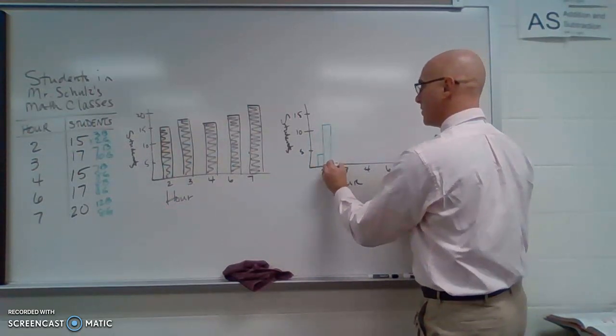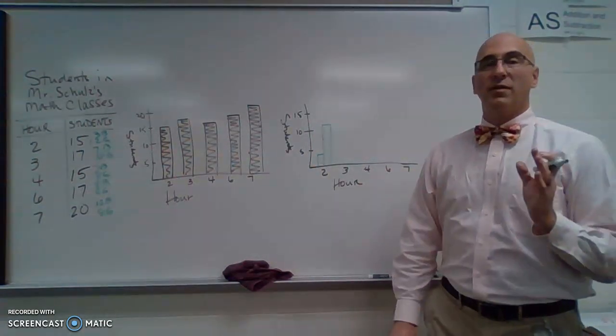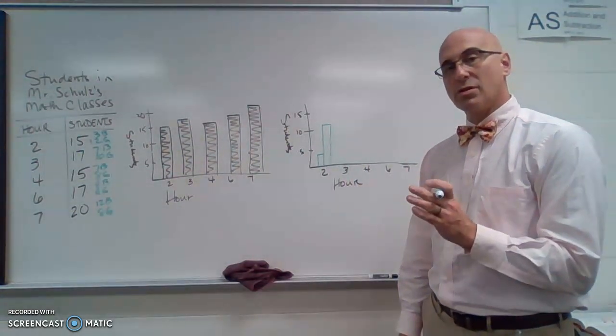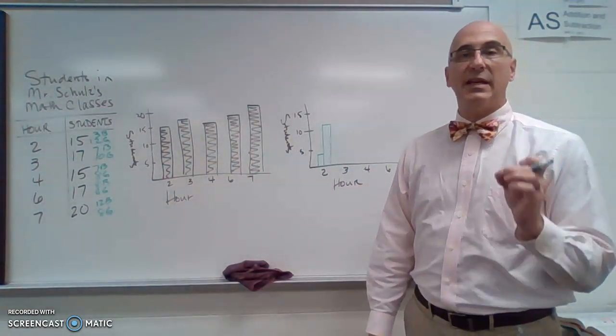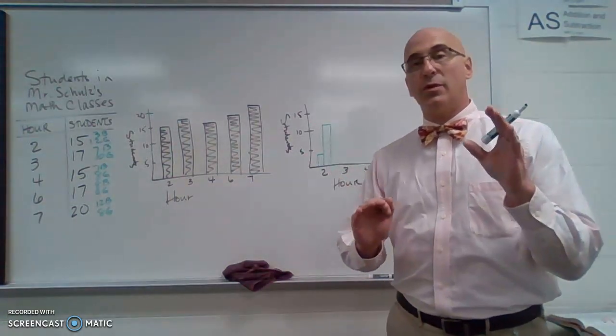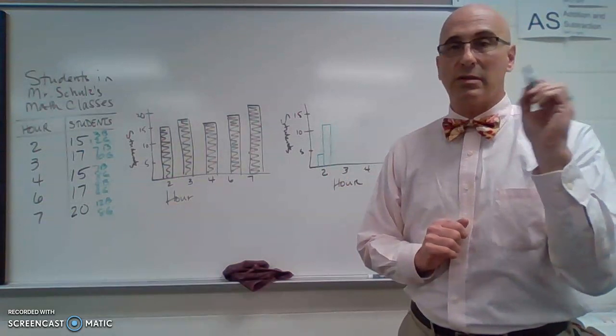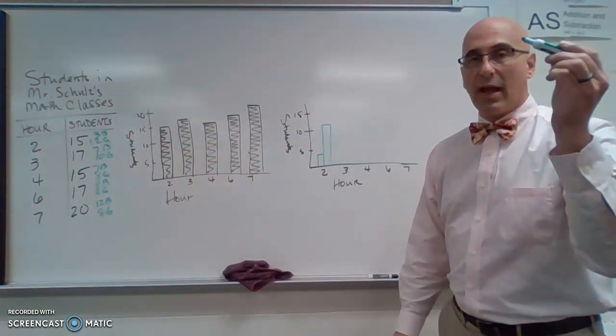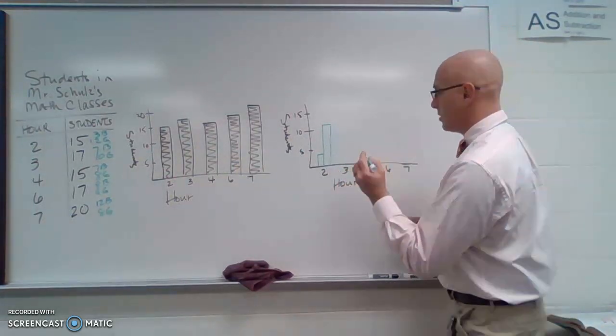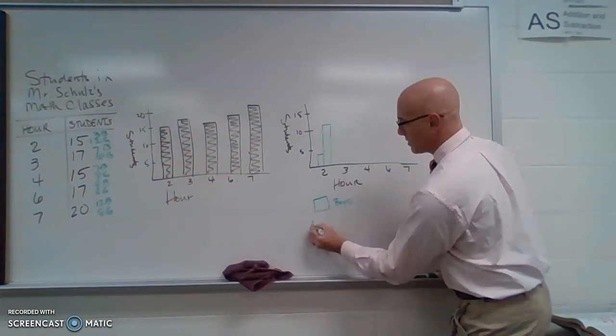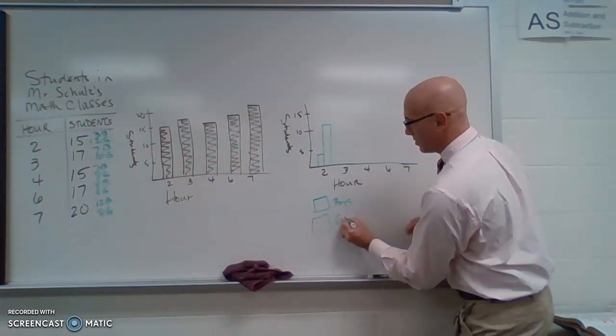So I am going to do this. Now one of these bars represents boys, one represents girls. I have to have some sort of key that shows which one. Now you could use different colors if you want to do the boys in one color, the girls in another color. Say you only have one color that you are working with. You can make a key. So I am going to say boys, and I am going to make a key that says girls.